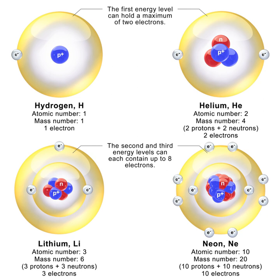Exposure to free neutrons can be hazardous, since the interaction of neutrons with molecules in the body can cause disruption to molecules and atoms, and can also cause reactions that give rise to other forms of radiation, such as protons. The normal precautions of radiation protection apply: avoid exposure, stay as far from the source as possible, and keep exposure time to a minimum. For other types of radiation — e.g., alpha particles, beta particles, or gamma rays — material of a high atomic number and with high density make for good shielding; frequently, lead is used. However, this approach will not work with neutrons, since the absorption of neutrons does not increase straightforwardly with atomic number, as it does with alpha, beta, and gamma radiation.